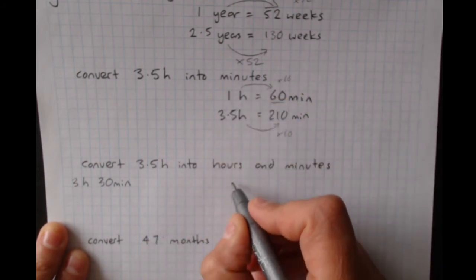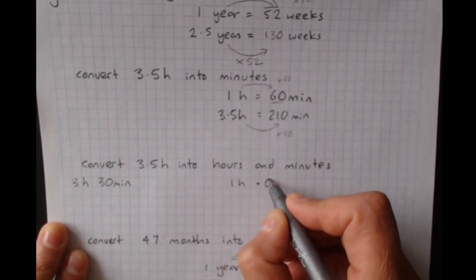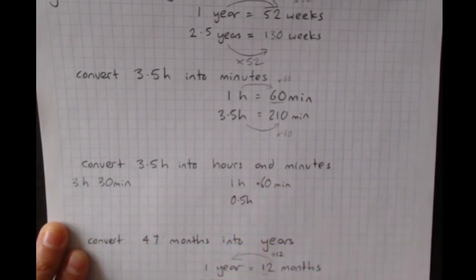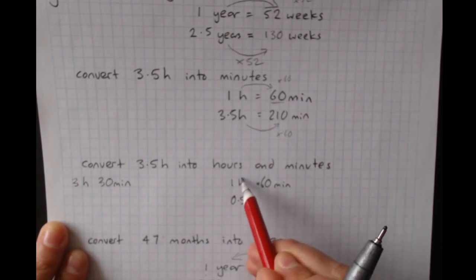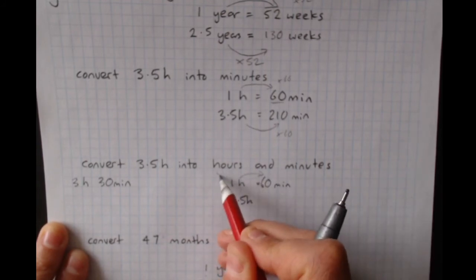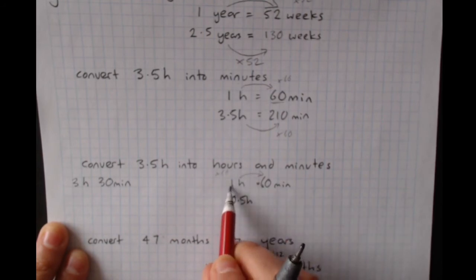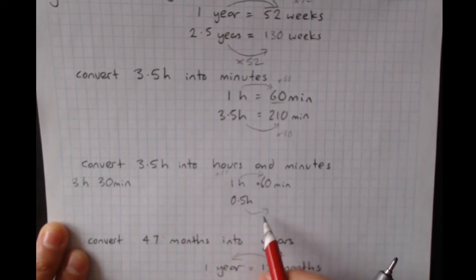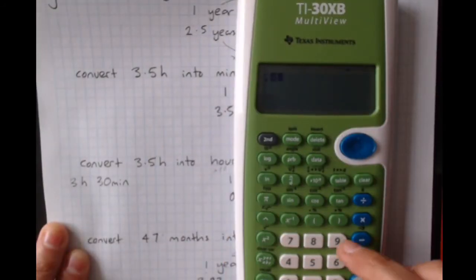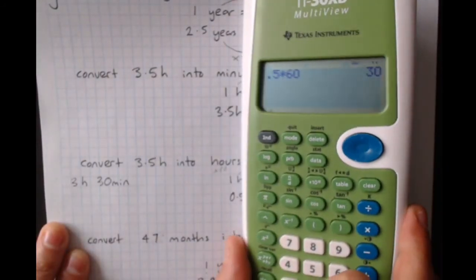So we can just do 1 hour is 60 minutes, 0.5 hours, and then do the same thing. I'm going to have to go from where I know it to where I don't know it. Times by 60 to go from 1 to 60 times 60. So I'll do this times 60 as well. 0.5 times 60, 30 minutes.